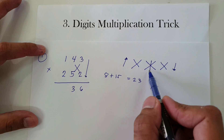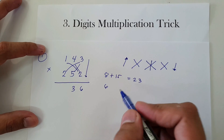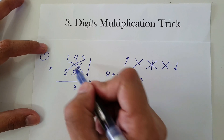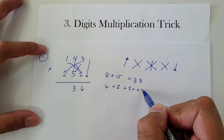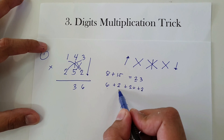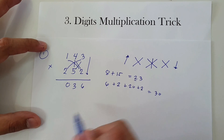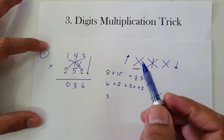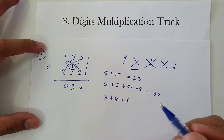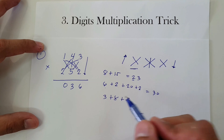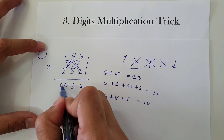Next, crossbar: 3 times 2 is 6, and 2 times 1 is 2, and 4 times 5 is 20. We carry 2. So if you add 6 plus 2 plus 20 plus 2, that's 30. We're going to have 0 here and carry 3. Next: 4 times 2 is 8, 5 times 1 is 5. Then 3 plus 5 plus 8 is 16. We have 6 here and carry 1.